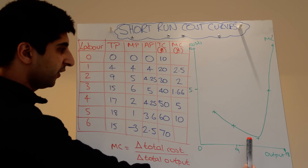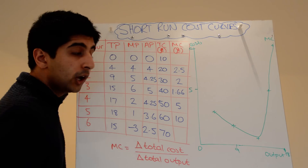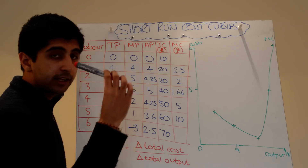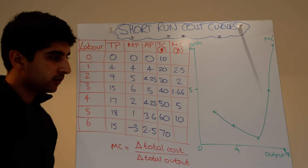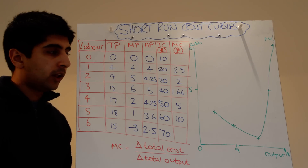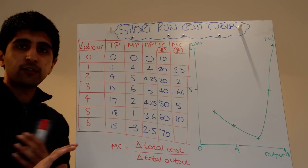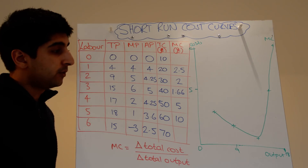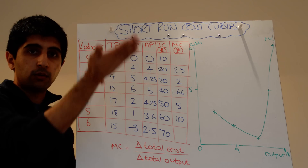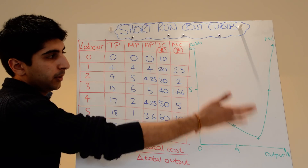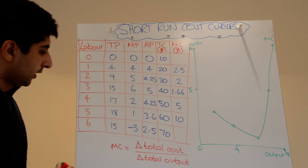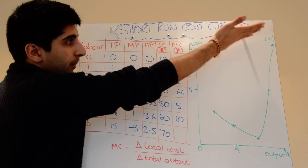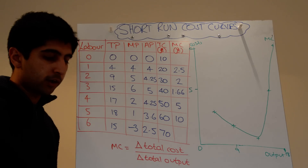Until — at around 15 units of output produced — we are then constrained by fixed factors of production. Even though we're trying to increase production by hiring more workers, productivity starts to fall because of the constraints of those fixed factors: we're running out of space, we don't have enough machines for each worker. So the productivity of labour starts to fall, which means our marginal costs start to increase. And as we go from 50 to 60, marginal costs rise even faster — the line gets steeper and steeper as the constraints get bigger and bigger.